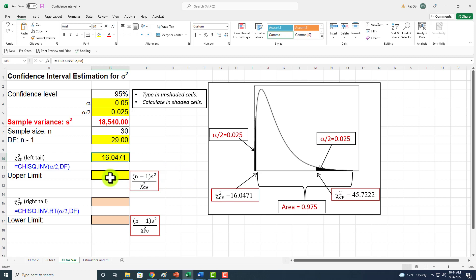With that, I calculate the limit: equals open parenthesis, degrees of freedom multiply that by the sample variance, close parenthesis, and divide that by the critical value which we just calculated. There you go.